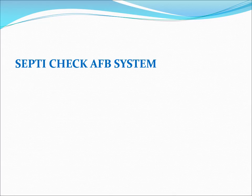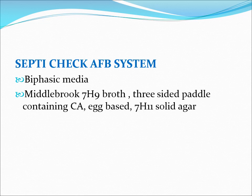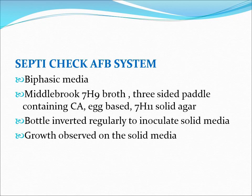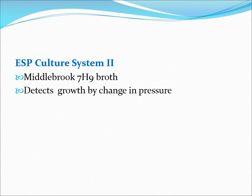The Septi-Check AFB system is a biphasic medium containing both liquid media — Middlebrook 7H9 broth — and three solid media: chocolate agar, Lowenstein-Jensen, and Middlebrook 7H11. Bottles are regularly inverted so the liquid medium subcultures itself onto the solid media. Growth is then observed on the solid media.